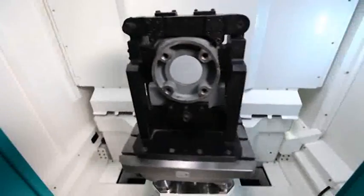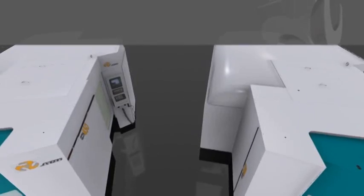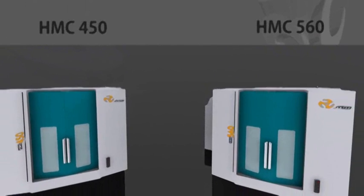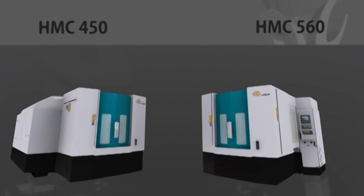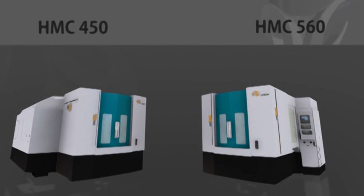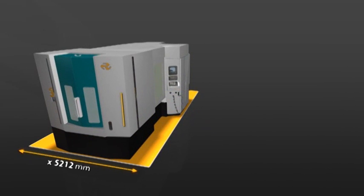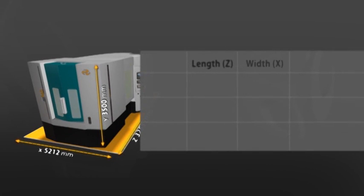Jyoti's HMC series machines are huge only in machining capacity, not in space they occupy. These meticulously designed and produced machines offer better space efficiency to cover less space compared to the working envelope it provides.